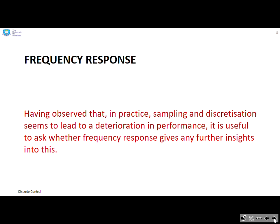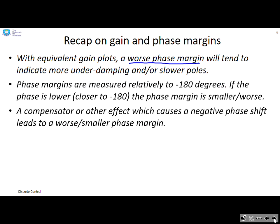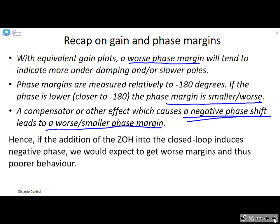Frequency response then. Having observed that in practice sampling and discretization seems to lead to a deterioration in performance, it's useful to ask whether frequency response methods give any further insights. Things you might remember: if you have equivalent gain plots then a worse phase margin will tend to indicate that you've got more underdamping and/or slower poles. Phase margins are measured relative to -180 degrees, so if the phase is lower—that is, closer to -180—then the phase margin is going to be smaller or worse. So in other words, anything which causes a negative phase shift tends to lead to a worse or smaller phase margin, so it's a bad thing. So we don't want negative phase—that's the key message.